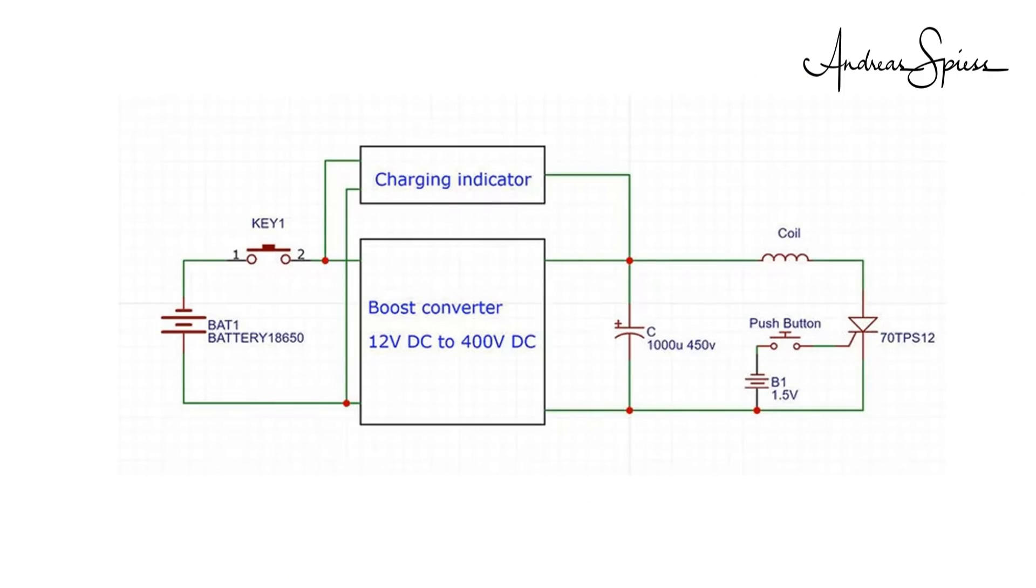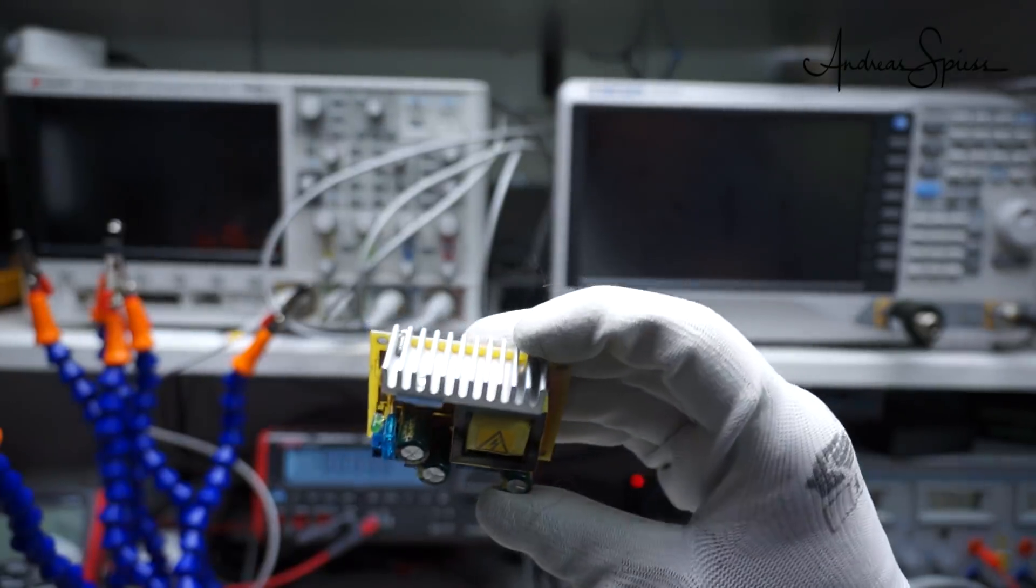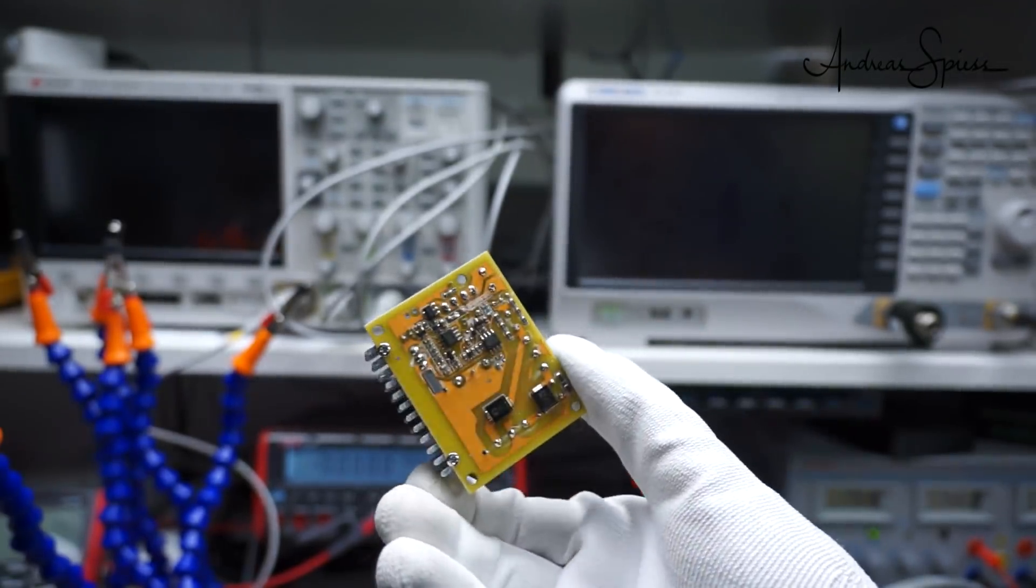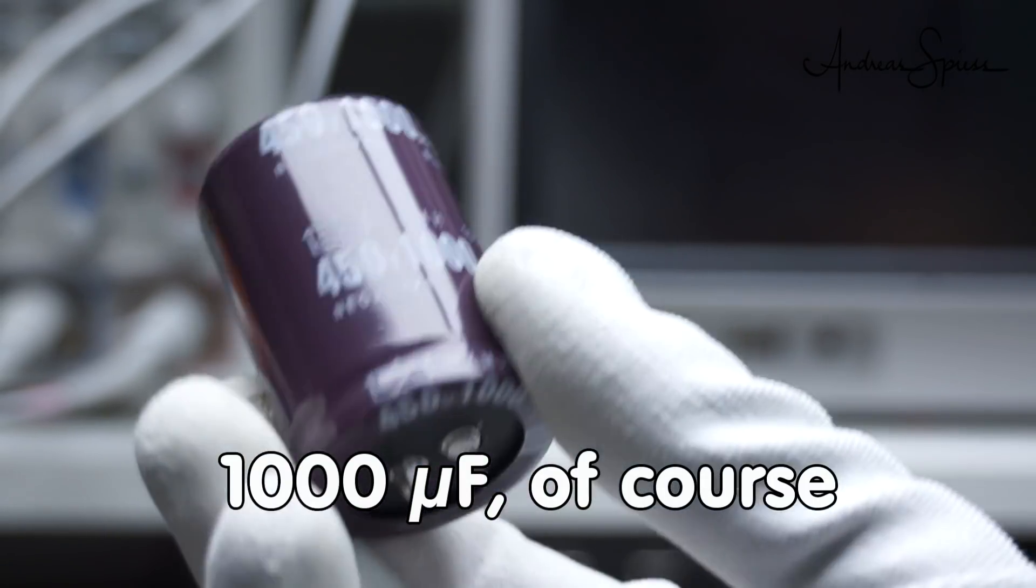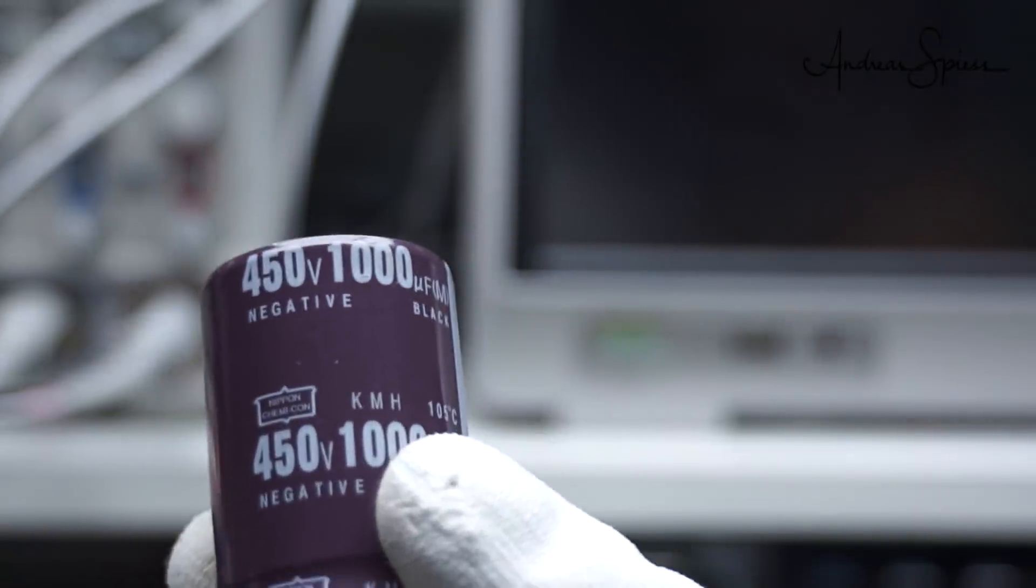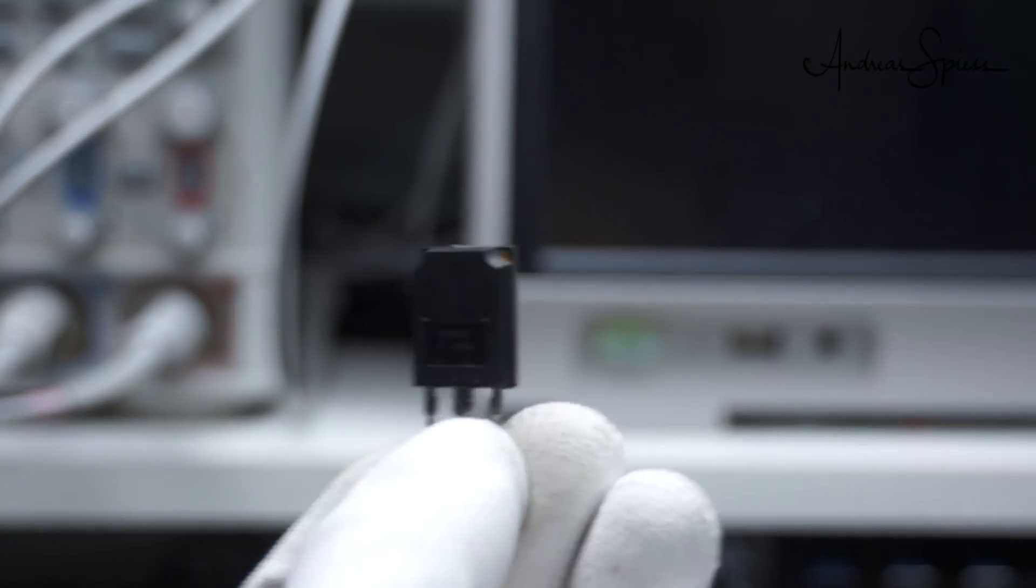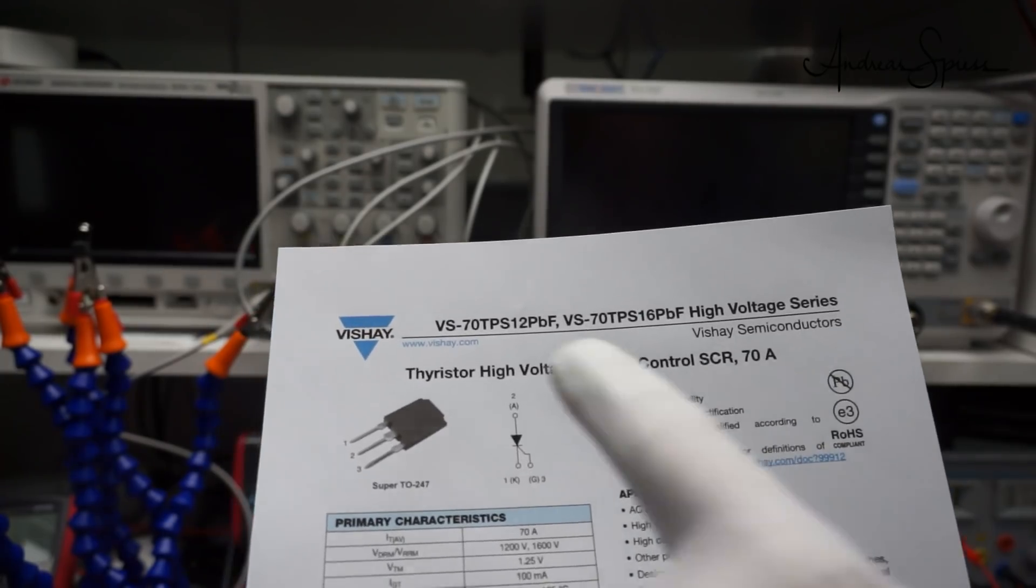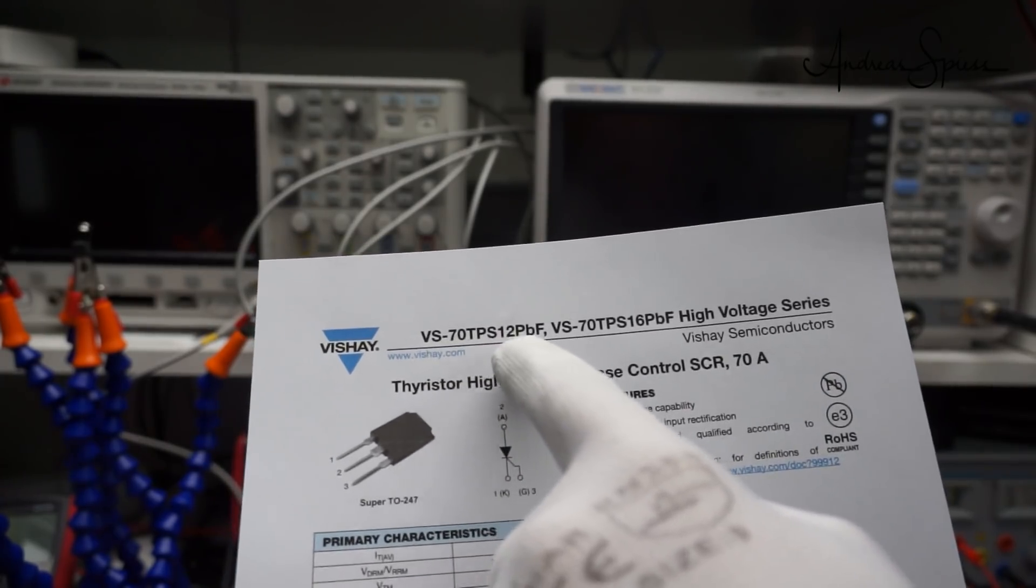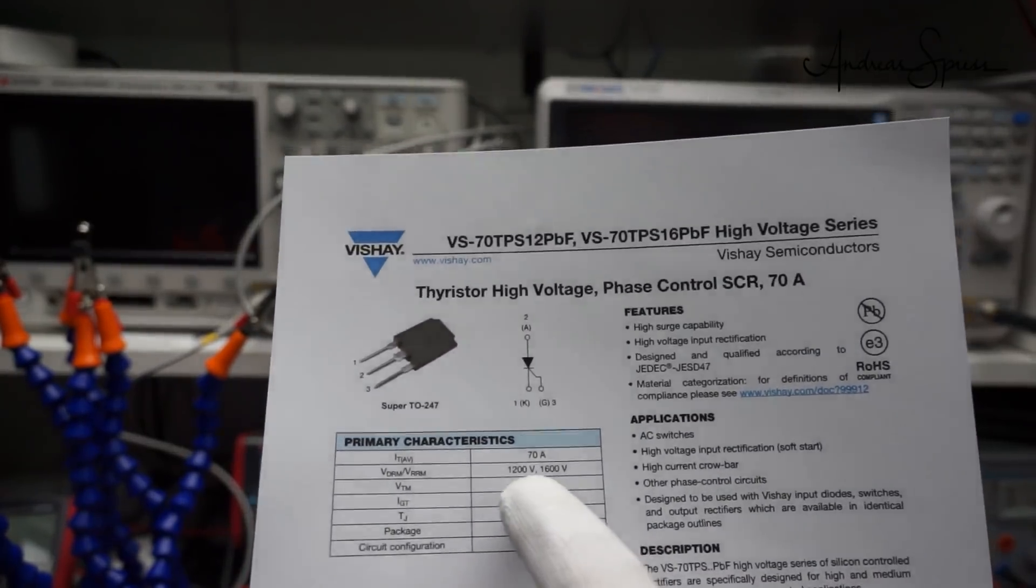I ordered the components as described in the instructable: a DC to DC converter which, according to its datasheet, should be able to output 400 volts and unfortunately exceeded its specifications; a 100 microfarad capacitor for 450 volts, some copper wire, and a thyristor. Thyristors are the working horses of high-voltage switching. The one I used was called 7-TPS12, and its datasheet says it can deal with more than 1200 volts and 70 amps.